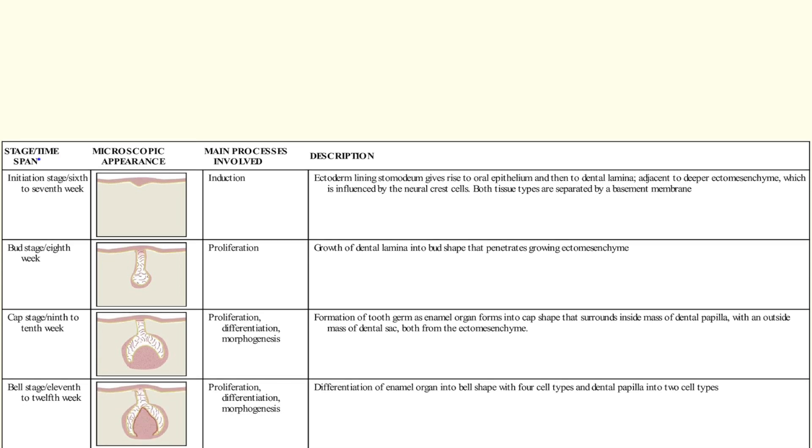The bell stage is characterized by the rapid differentiation of cells into ameloblasts, odontoblasts, cementoblasts, and fibroblasts in the early stage, and the formation of dentin and enamel in the late stage. The primary mechanisms involved are proliferation, morphogenesis, and differentiation.